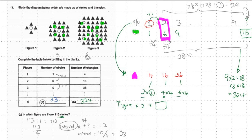So it goes: 28 intervals times four equals 112. Then you add back the first number — one — so 112 plus one equals 113. That confirms pattern number 29 gives a circle count of 113.